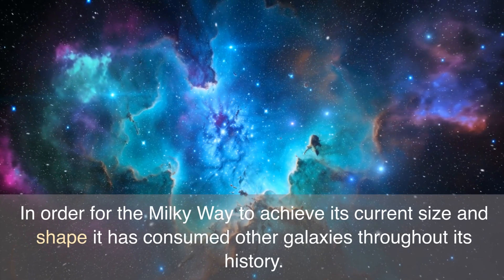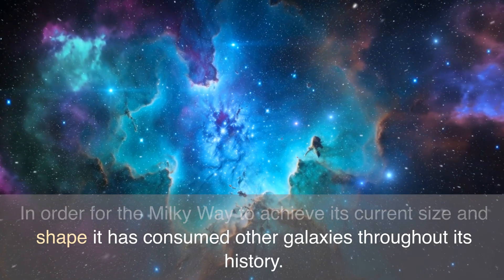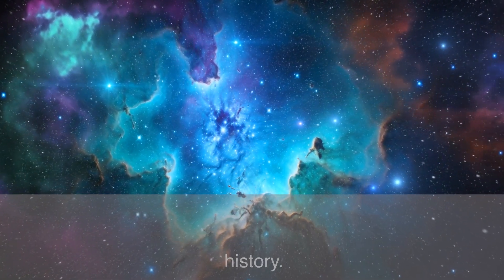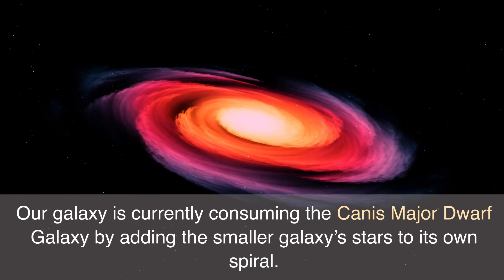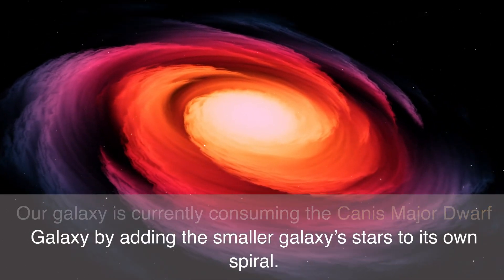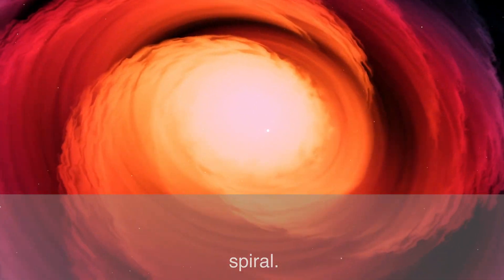Number 5: It was made from other galaxies. In order for the Milky Way to achieve its current size and shape, it has consumed other galaxies throughout its history. Our galaxy is currently consuming the Canis Major Dwarf galaxy by adding the smaller galaxy's stars to its own spiral.